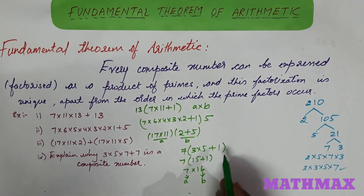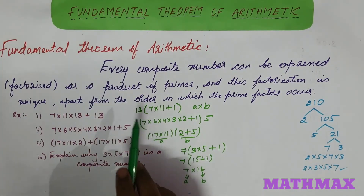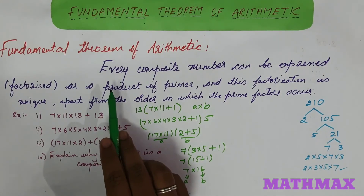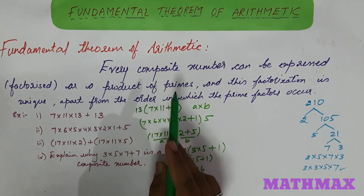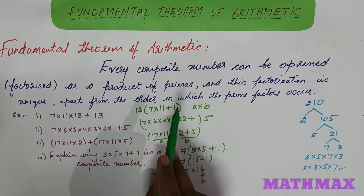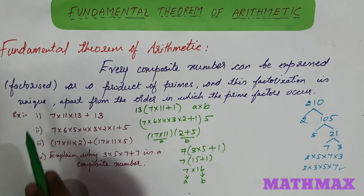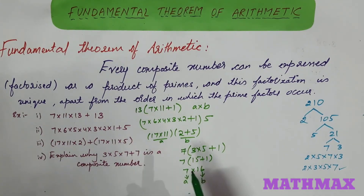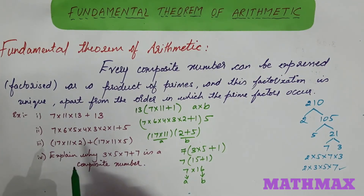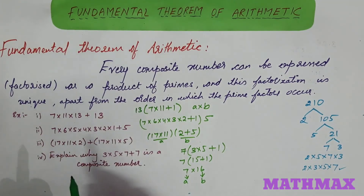You need to write as per the Fundamental Theorem of Arithmetic: this number is expressed as a product of two numbers, so it is a composite number. You need to solve the expression and then write the definition — that any composite number can be expressed as a product of primes and the factorization should be unique. In this way you can solve the given questions using the Fundamental Theorem of Arithmetic. Thank you.